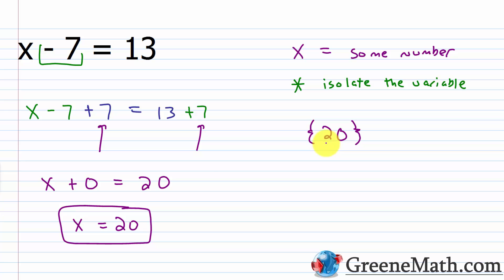So we can always check this by plugging in a 20 for x and making sure we have the same value on the left as on the right. So I would have a 20 minus a 7 equals 13. 20 minus 7 is 13, so 13 equals 13. This is true. We have the right answer. And for this one, it's so easy, you could just eyeball it. What number minus 7 gives us 13? Well, 20 does.